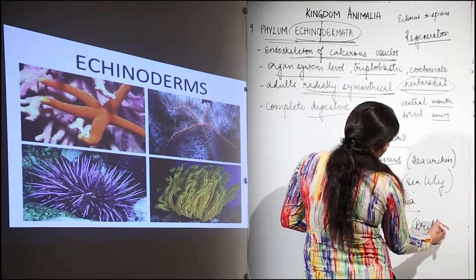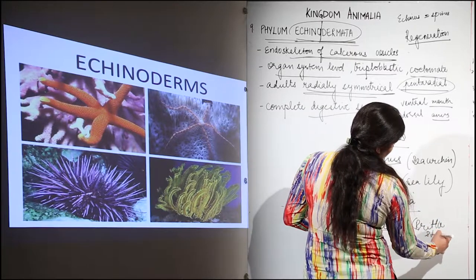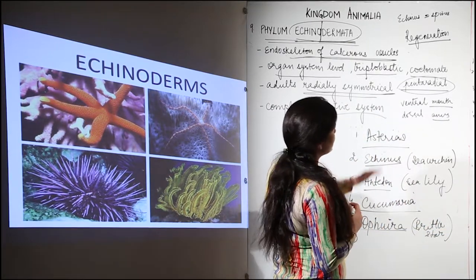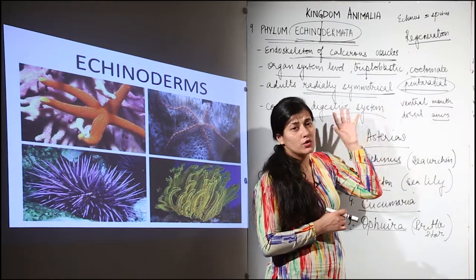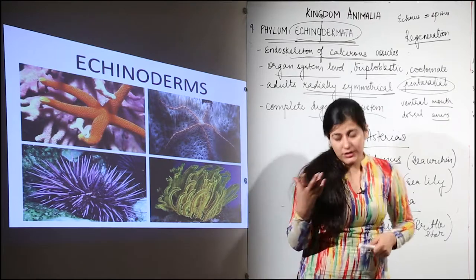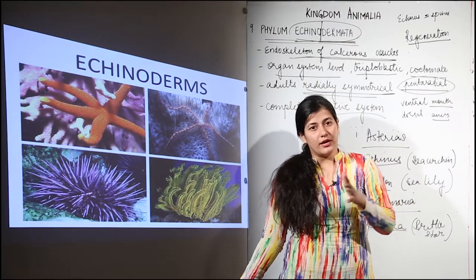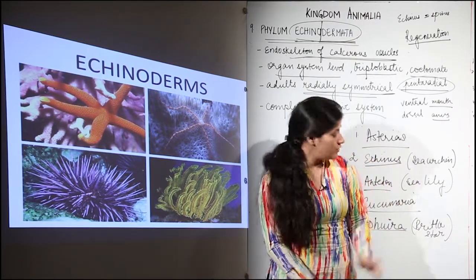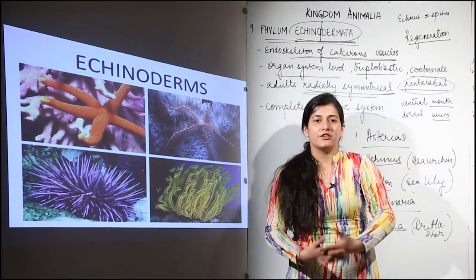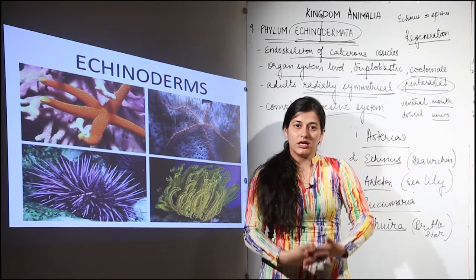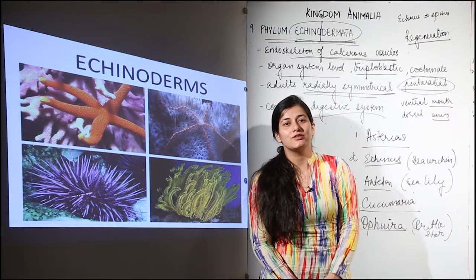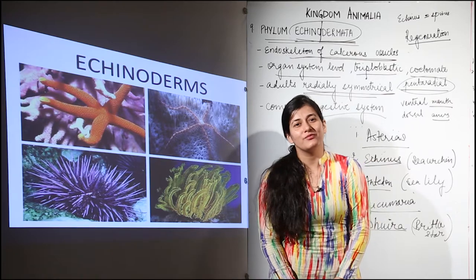So to recap: we have seen the examples of echinoderms. Their reproduction is sexual, they have a high capacity for regeneration, their symmetry is pentaradial (with bilaterally symmetrical larvae), they are placed in the ninth position, they are coelomate and triploblastic. Learn these examples with their common names — it would be better if you look at the pictures and associate the names with the images, as that picture input will help you remember them for a longer time.